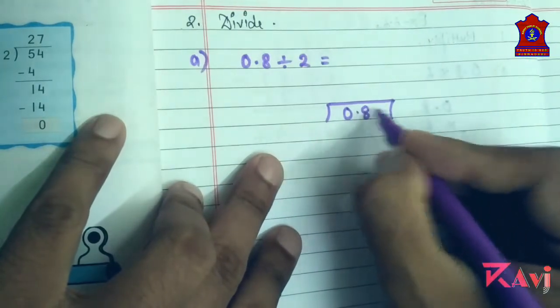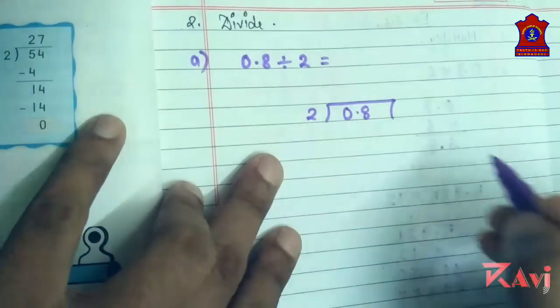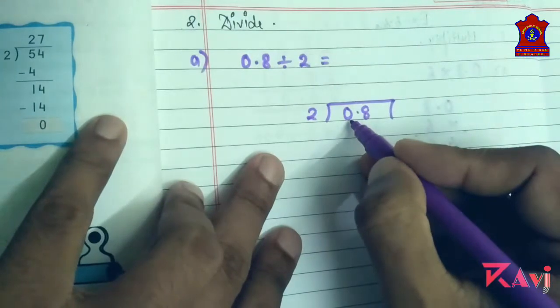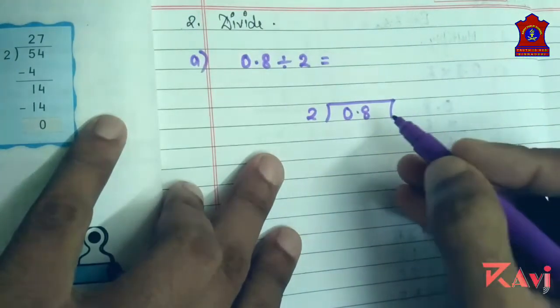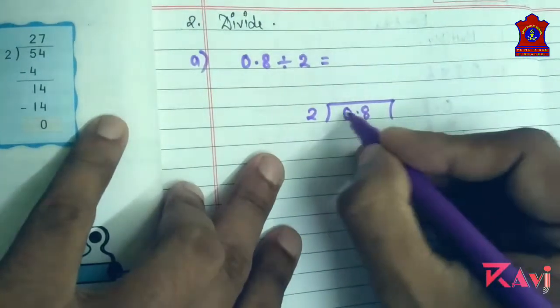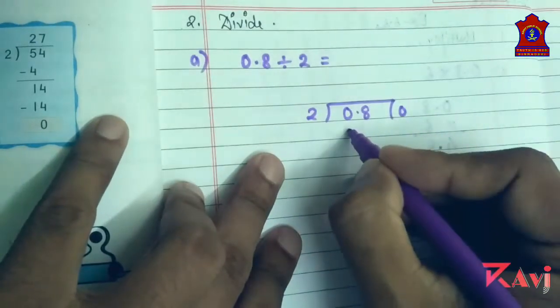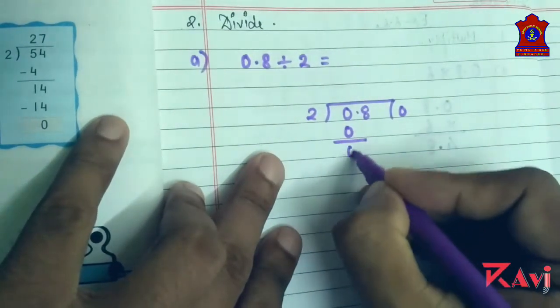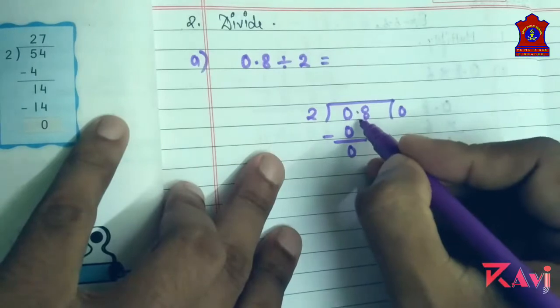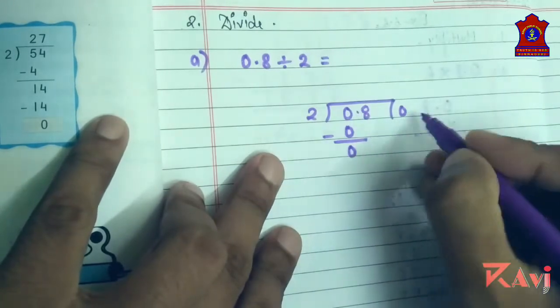Zero is not in two's table, so what you can do, you can start with zero only. Two zeros are zero, so zero only. Then what is there after that? Our decimal, put a decimal.